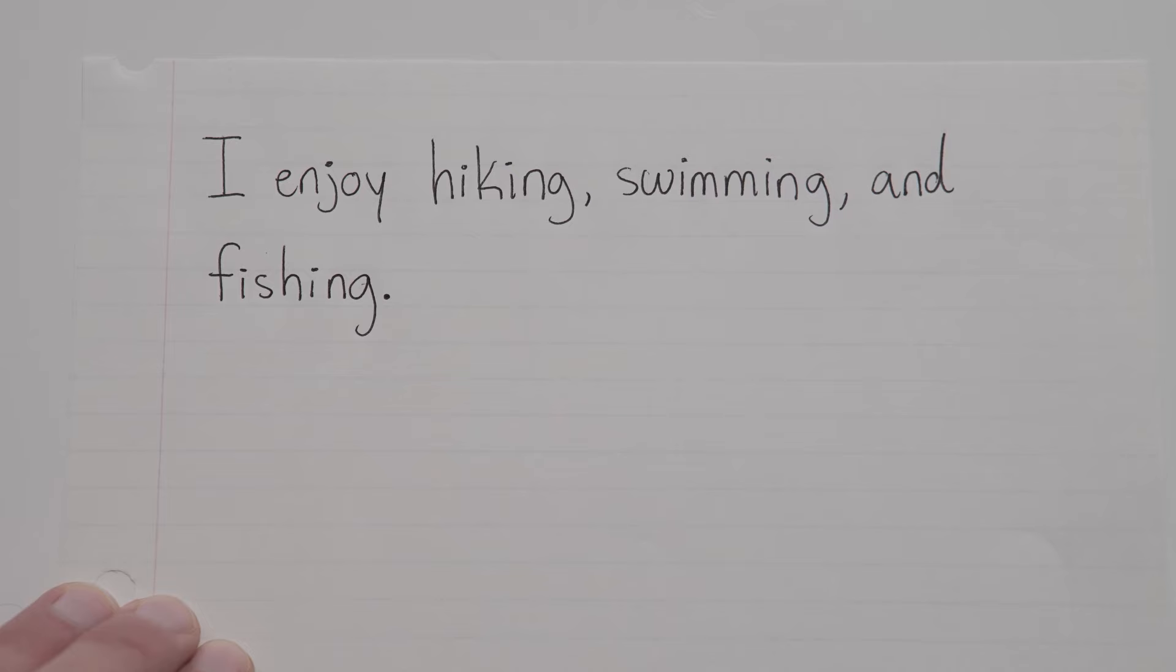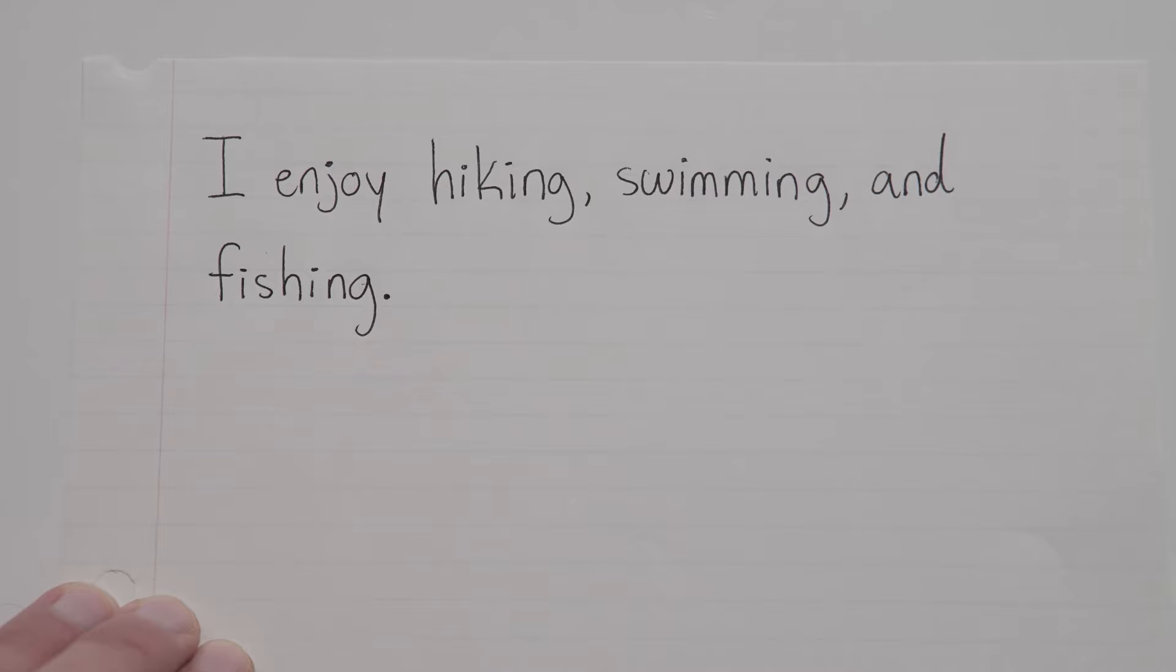Let's look at a really basic example of this. I enjoy hiking, swimming, and fishing. So there are three words here that are all parallel, that are all written the same way: hiking, swimming, and fishing. They're all written as gerunds, as -ing activities, as things that you do. So this is good. This is parallel structure.